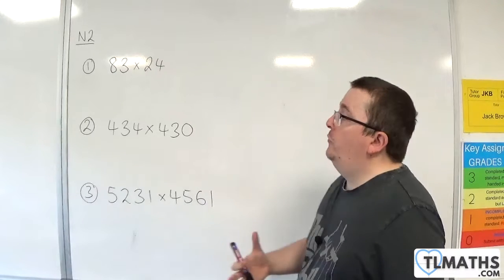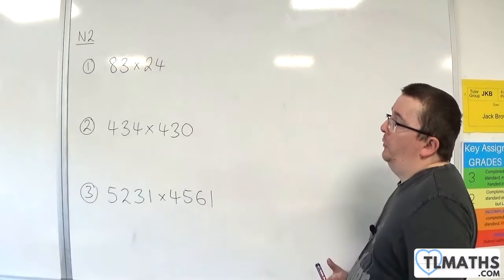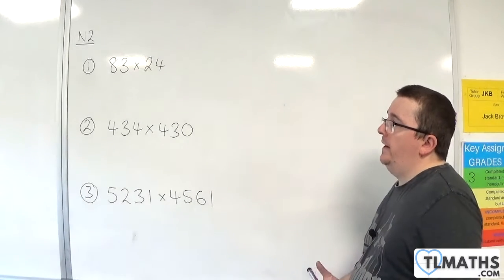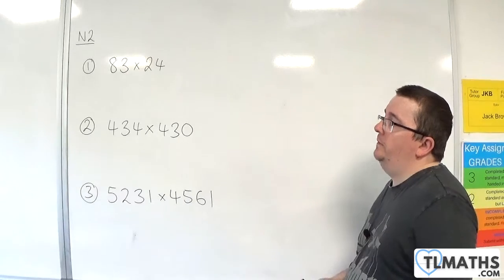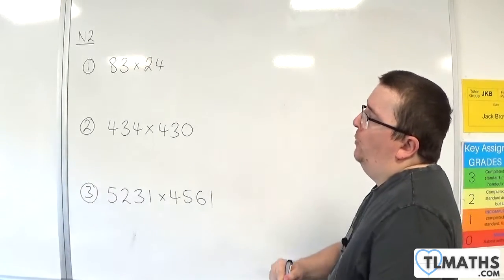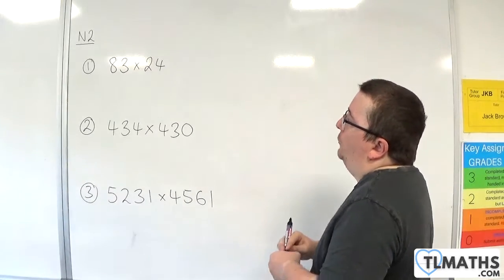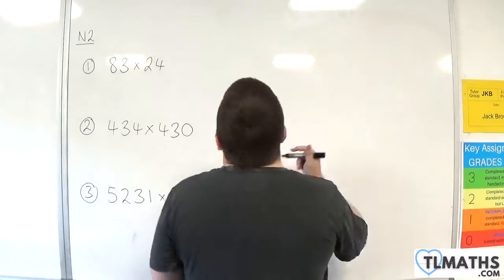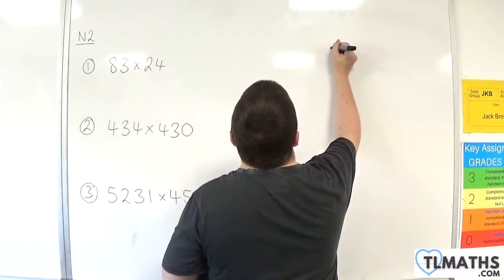In this video I want to go through some more examples of multiplying integers together. So let's start off with the first one: 83 times 24.